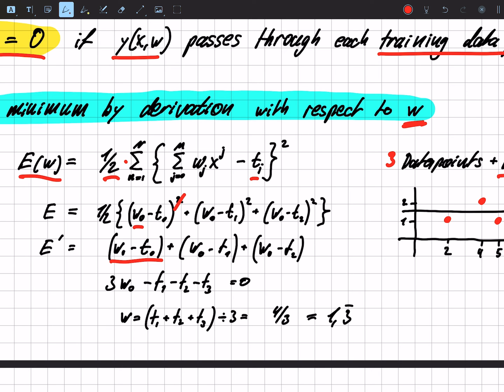We can rewrite the whole thing, we have three times w0 minus t1 minus t2 minus t3, and this has to be zero, because this is our minimum.